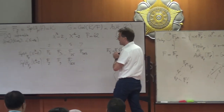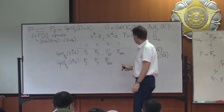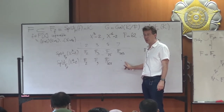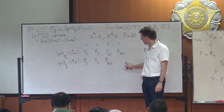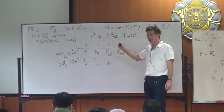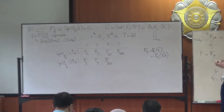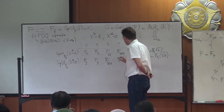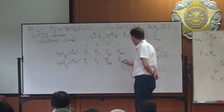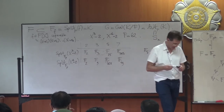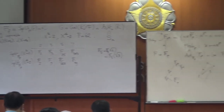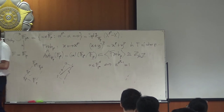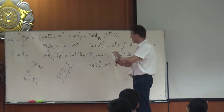Over 𝔽_7: if α⁴ = 2, then α¹² = 2³ = 8 ≡ 1 mod 7, so α has order 12. We need the smallest n such that 12 divides 7^n − 1. Since 7² = 49 = 48 + 1 and 48 is divisible by 12, n = 2, so the splitting field is 𝔽_{7²} = 𝔽_{49}. Finite fields really come down to multiplicative group orders.